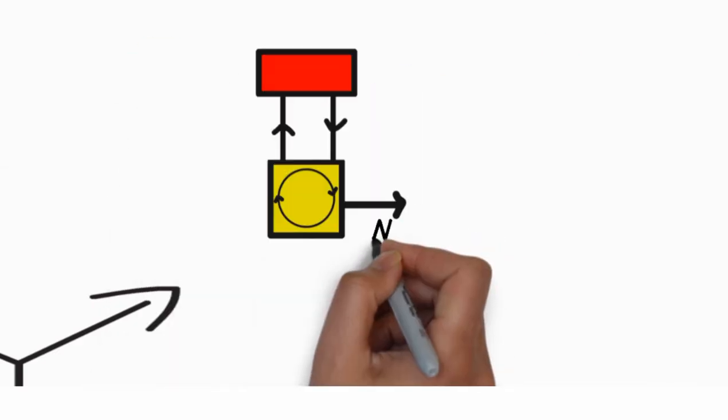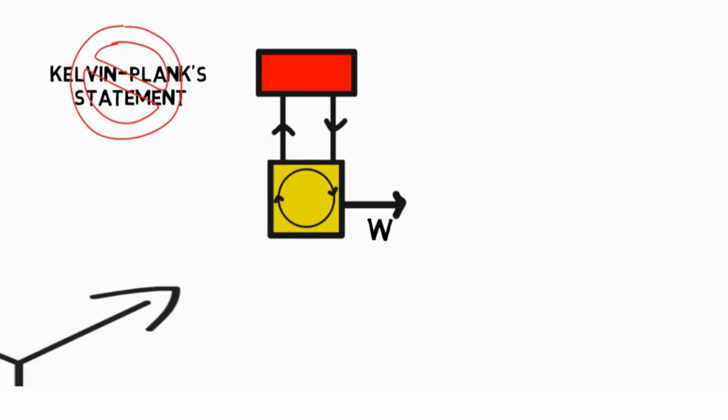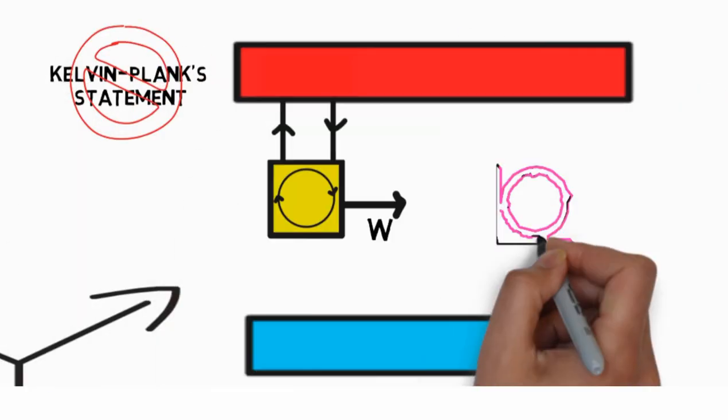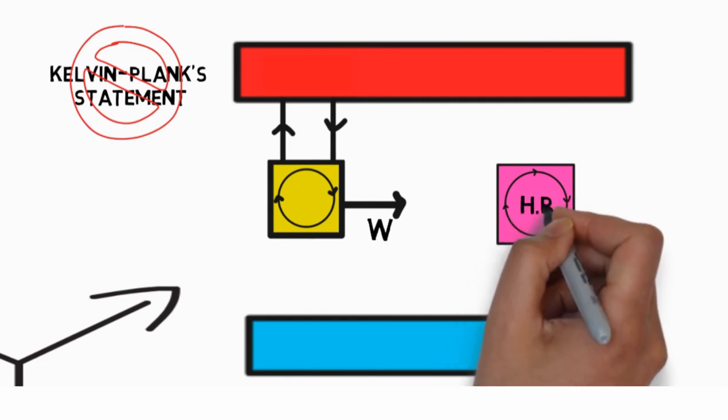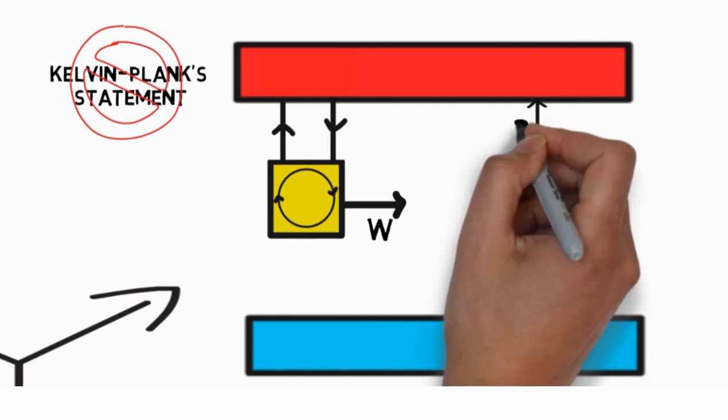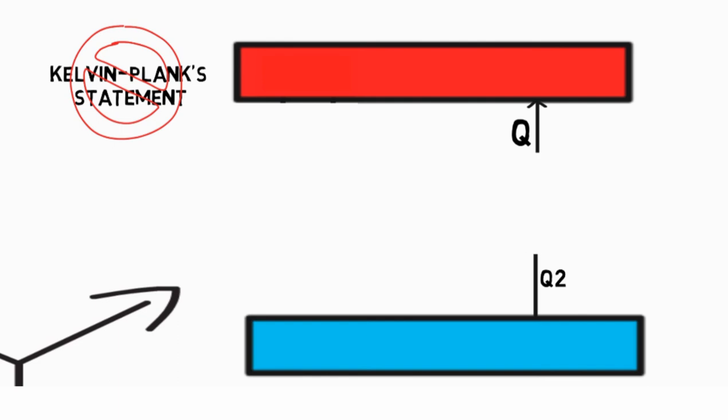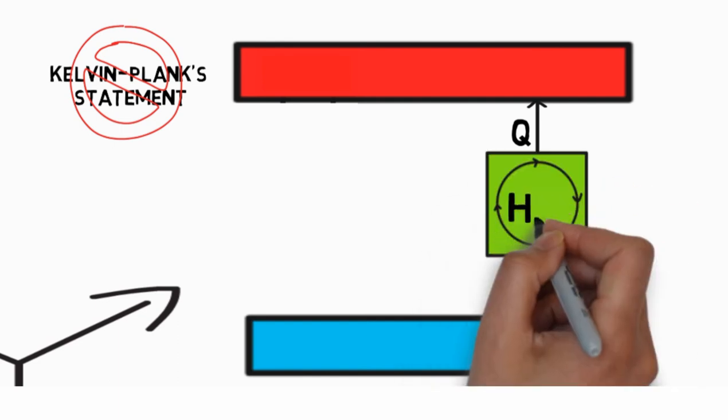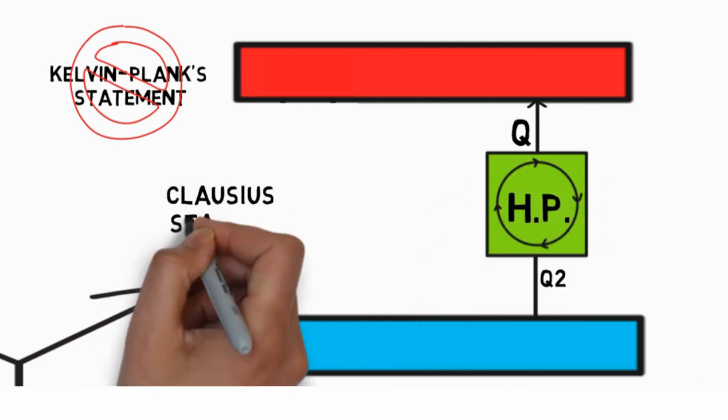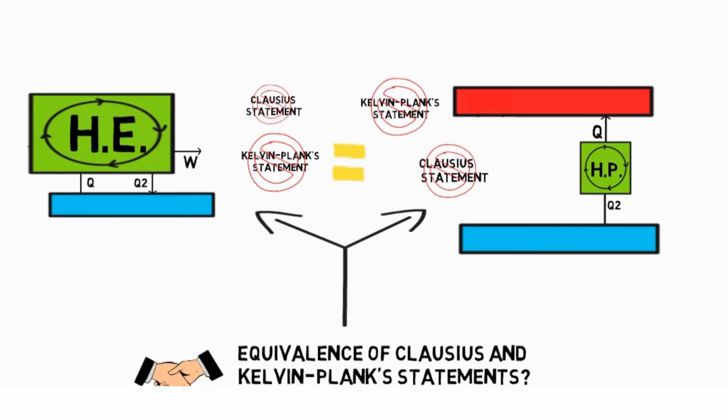Second, consider a PMM-2 which violates the Kelvin-Planck statement. That is, assume a cyclic heat pump extracting heat Q2 from a low temperature reservoir and discharging heat to the high temperature reservoir, with the expenditure of work equal to what PMM-2 delivers in a cycle. Now, both these together constitute a heat pump whose sole effect of transferring heat from lower to higher temperature body violates the Clausius statement, thus providing an equivalence.